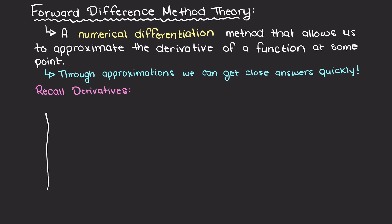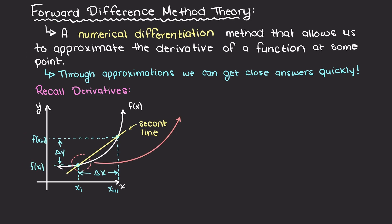To understand the forward difference method, let's begin by remembering the definition of a derivative. If we begin with a secant line, that is a line passing through two points on our function, the difference in y over our difference in x is going to be our slope between these two points.